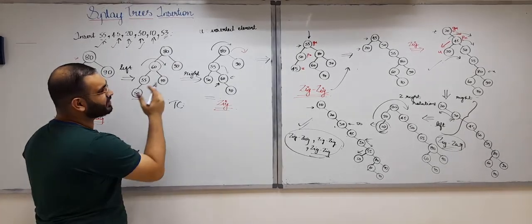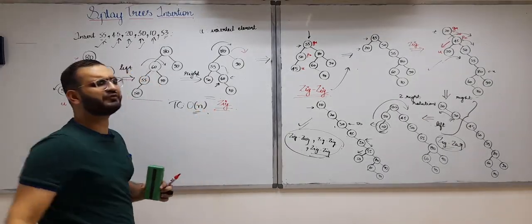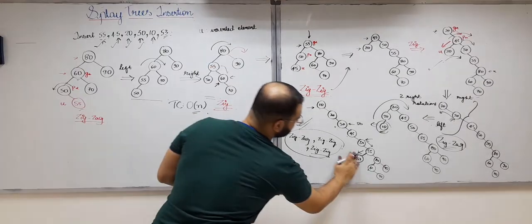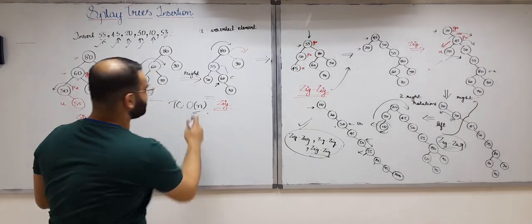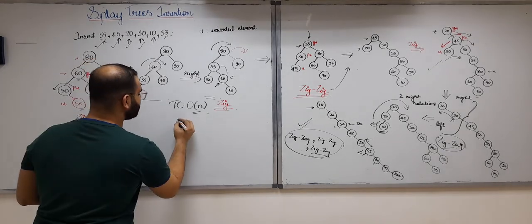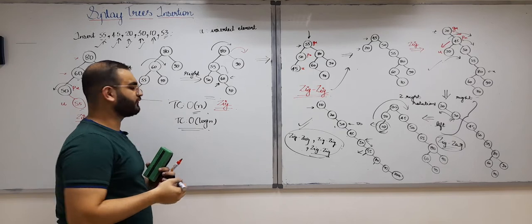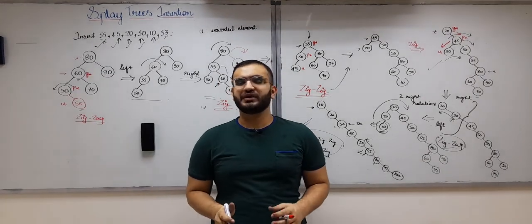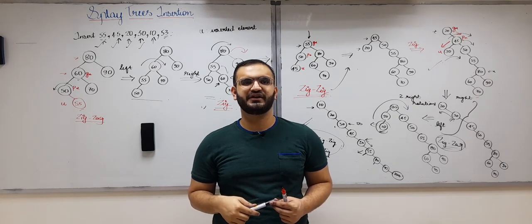Regarding time complexity: the asymptotic worst-case time complexity of a single insert operation in a splay tree is O(n), because the splay tree can be a skewed tree. However, the amortized time complexity of a single insert operation is O(log n). That's all for this video on insert operation in splay trees. In the next video we will learn how to perform the delete operation in splay trees.